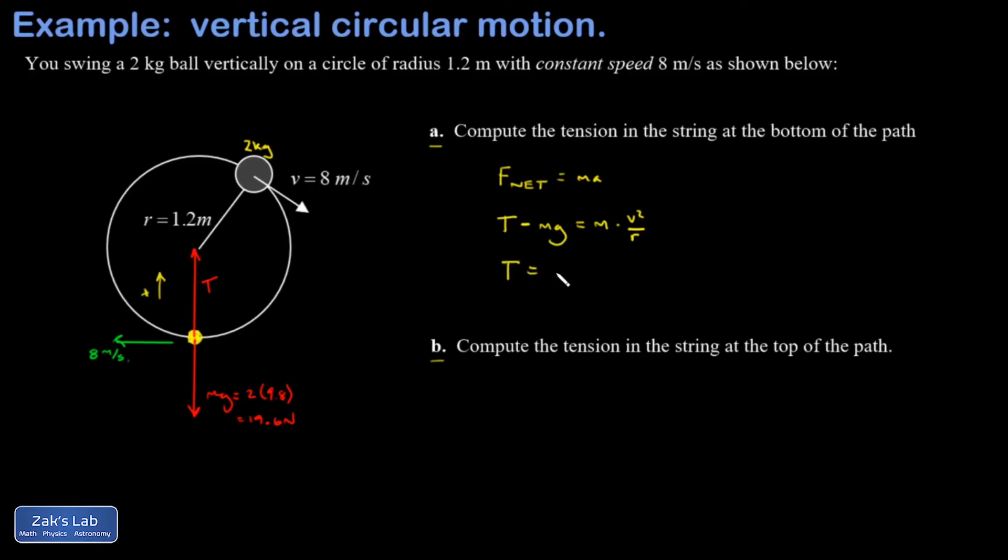So T is going to be mg plus mv squared over r. You could factor the m out first but I already have a number on mg so I'm just going to do it this way. And I get to three sig figs 126 newtons tension.